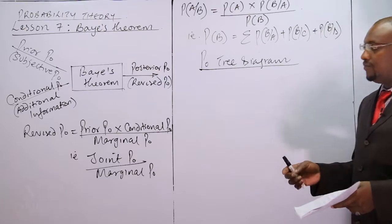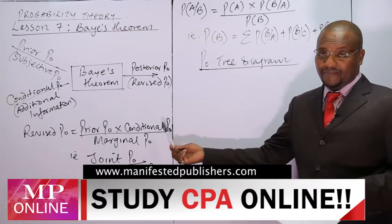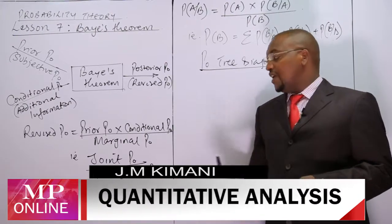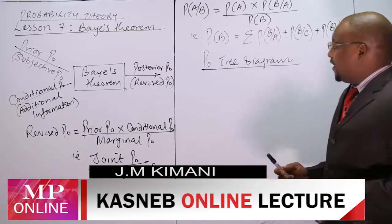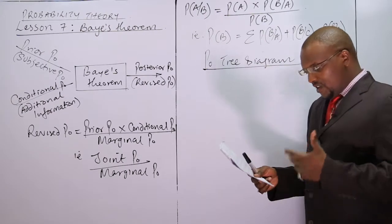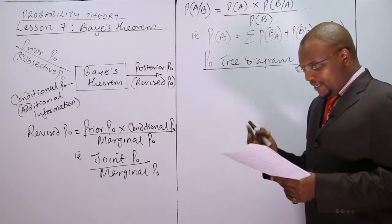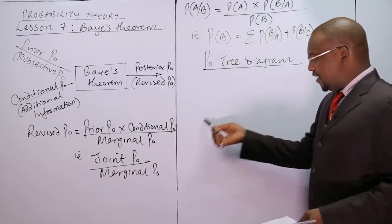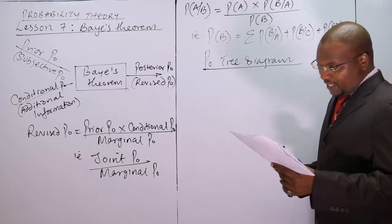This question has prior probabilities and conditional probabilities — we just need to multiply to get the marginal probabilities. To make it simple, we can use a tree diagram. The tree diagram involves stages; this question has two stages. The first stage is the distribution of accounts for auditing among three members: Othiambo, Koech, and Moai — so the first stage has three branches.